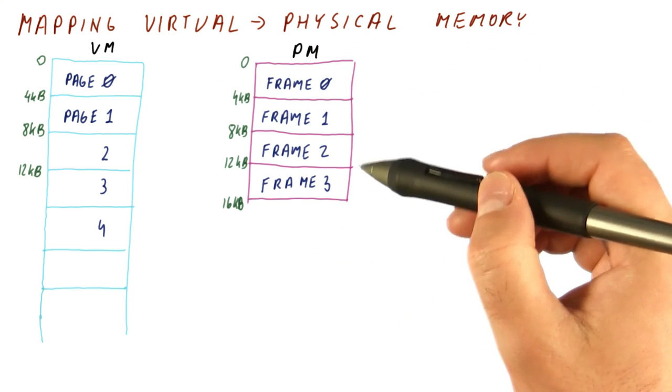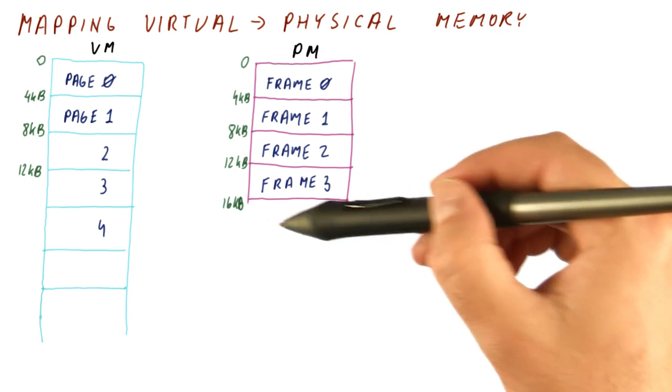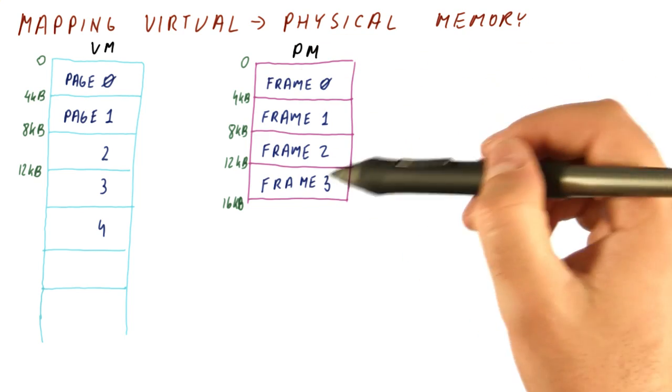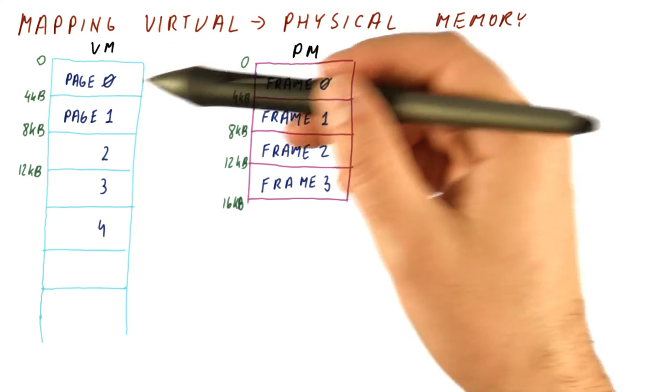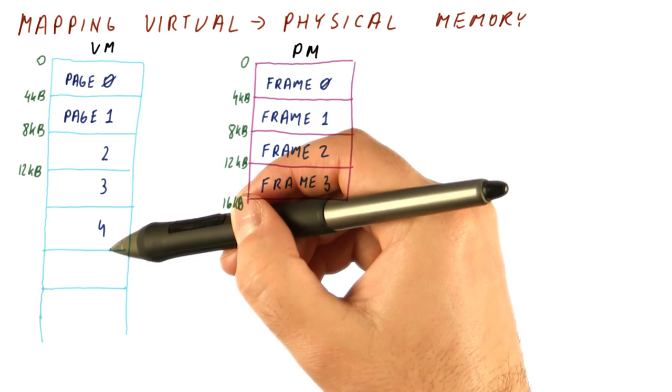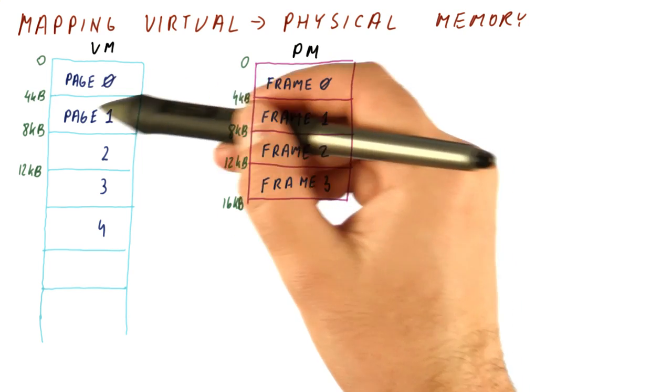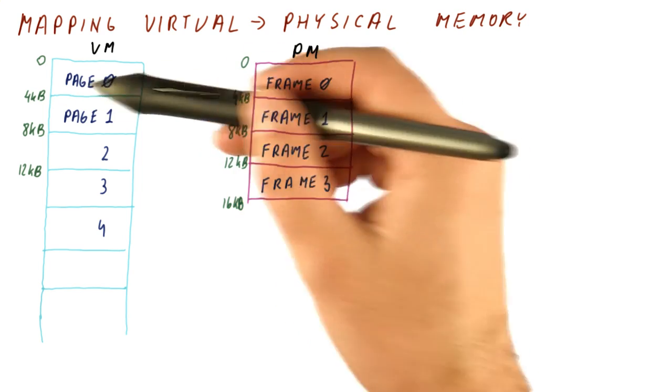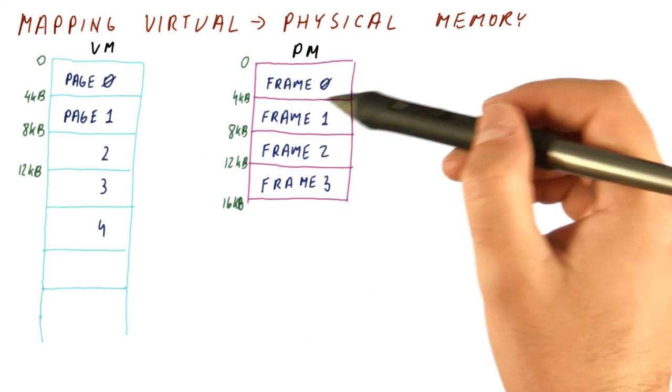So if you remember your caches, pretty much the physical memory behaves like a cache for the virtual memory, in that it has a certain number of places where we can put pages. So a page is kind of like a memory block, and the frame is kind of like a cache line.